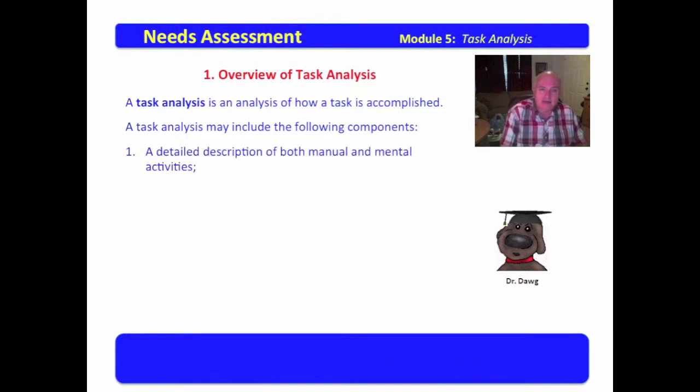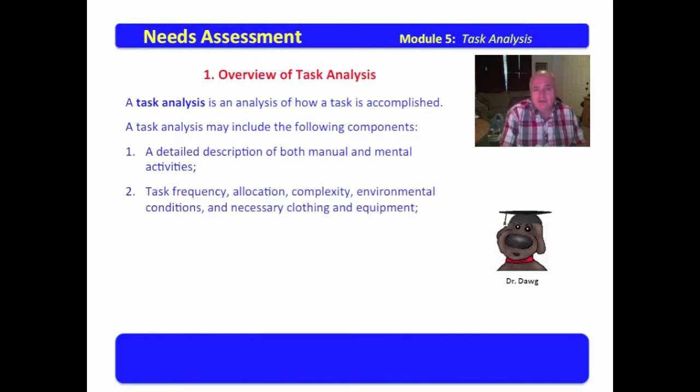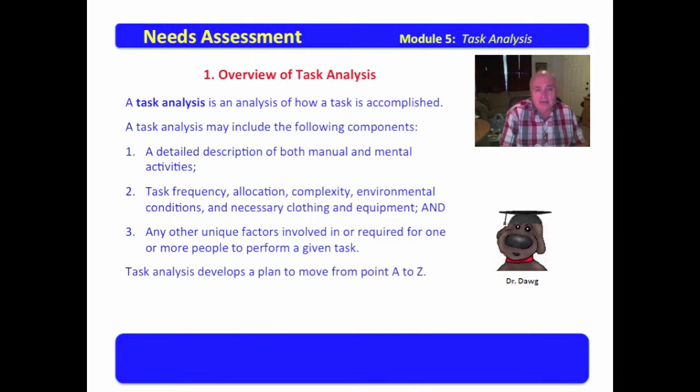First of all, a detailed description of both manual and mental activities. Tasks require things that must be done by hand, must be done physically, but also things that must be done mentally. Task frequency, allocation, complexity, environmental conditions, necessary clothing and equipment are important, and any other unique factors involved in or required to one or more people to perform a given task.